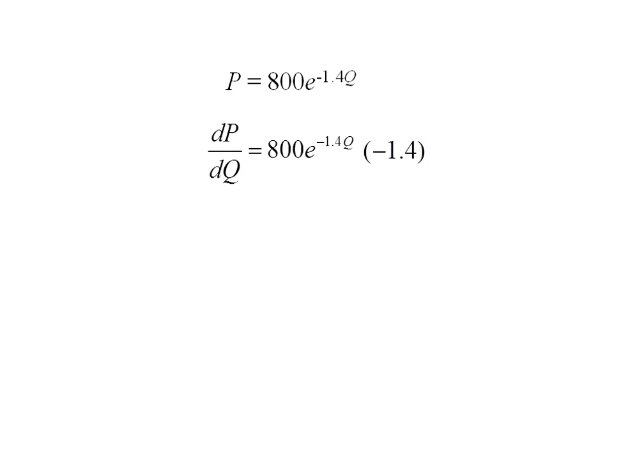Now I take the derivative of -1.4Q, which is -1.4, and multiply that by my original expression. Combining 800 times -1.4, my final answer is -1120e^(-1.4Q).